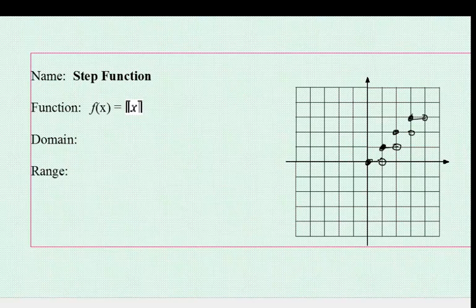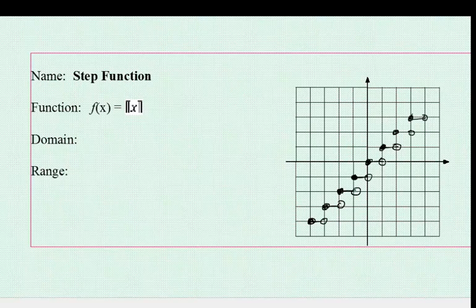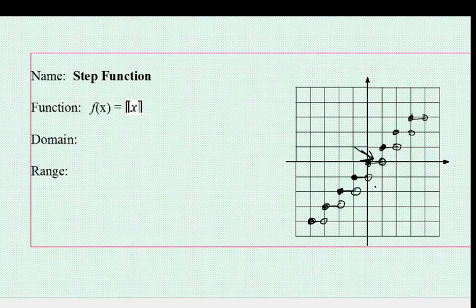Notice every single x value is covered here. From 0 to 0.9, it's there, and once you get to 1 it jumps up. Even though it's not a straight line, all those x values are included in the graph. Even as we go into the negative world, the step pattern continues. So if you talk about domain — domain is the x values included on the graph — we said every single x value, even the decimals between each integer, is included. So we would say it's from negative infinity to positive infinity.